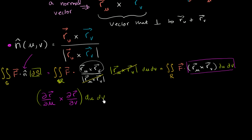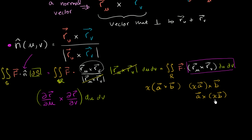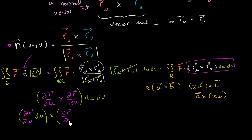Now du and dv are just scalar quantities — infinitesimally small, but not vectors. And so you can essentially include them inside the cross product. If you have a cross b times some scalar x, you can rewrite it as x times a cross b, or as a cross (x times b), because x is just a number. So we can do the same thing here and group du with the partial with respect to u, and dv with the partial with respect to v. You get the partial of r with respect to u times du, crossed with the partial of r with respect to v times dv.